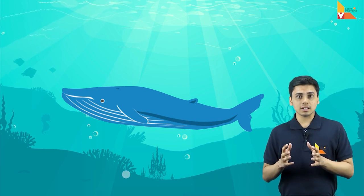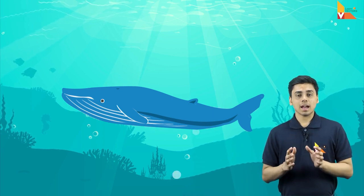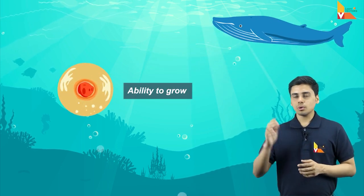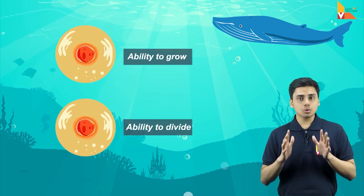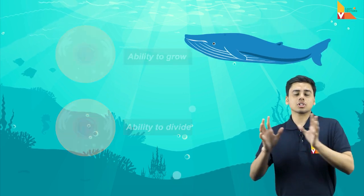So, you might think: how can a single cell give rise to such a large organism like a blue whale? Well, the answer to this lies in two of the most important characteristics of a cell, and that is their ability to grow and to divide. These are the two main properties of a cell which give rise to such large organisms like a blue whale or even like human beings.